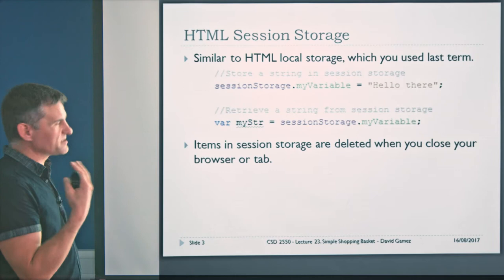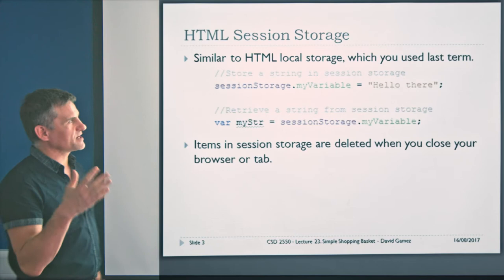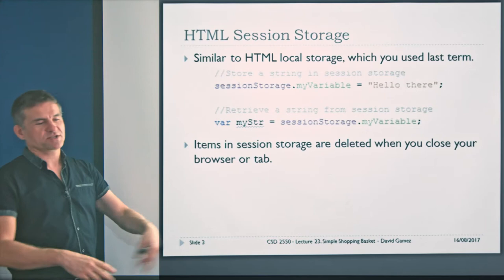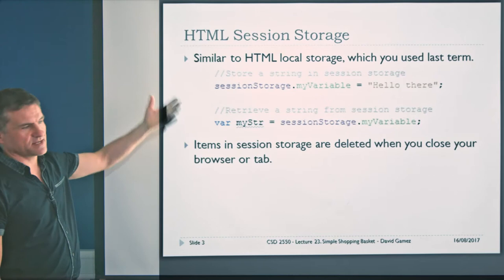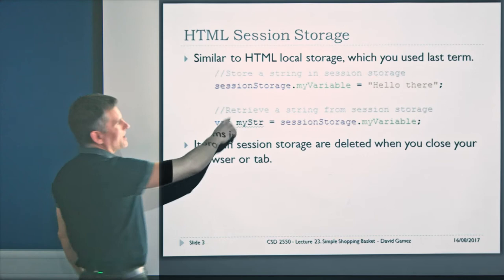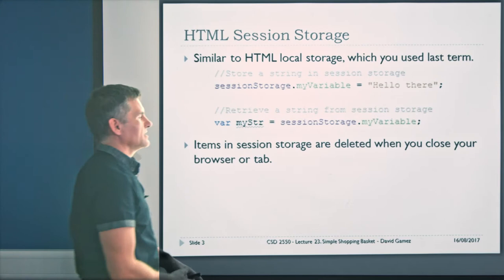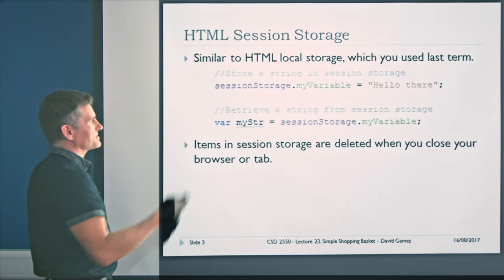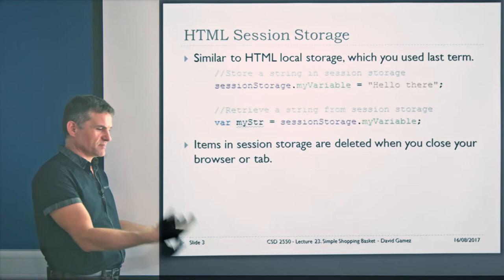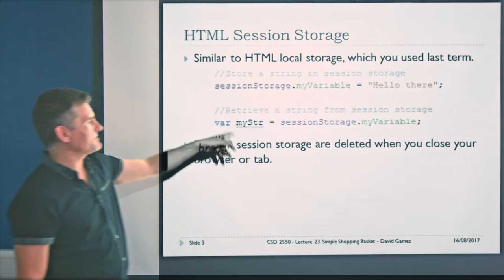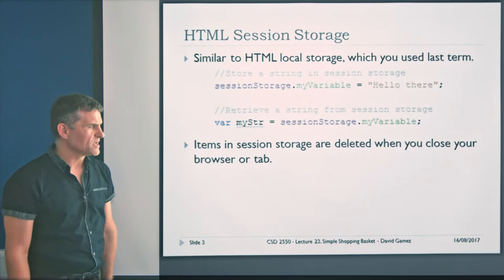In this lecture, I'm going to show how you can implement a basket using HTML session storage. It works pretty much identically to HTML local storage, except local storage never gets deleted unless you explicitly clear it, whereas session storage gets deleted the moment you close the tab. You use them in the same way — for example, sessionStorage.myVariable = 'Hello there' stores the string. Since you can only store strings, if you want to store objects you have to stringify them to store them and then parse them to convert them back into JavaScript objects. Items in session storage are deleted when you close the browser or tab.